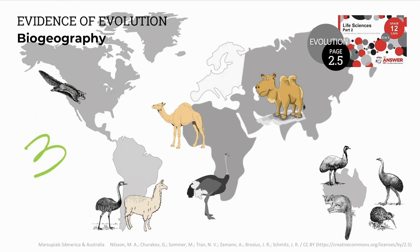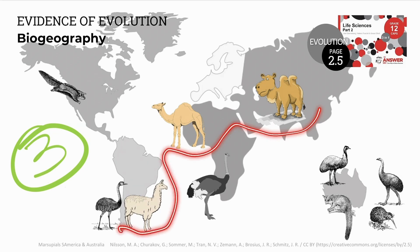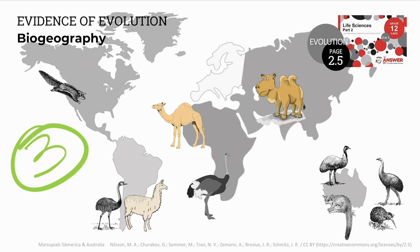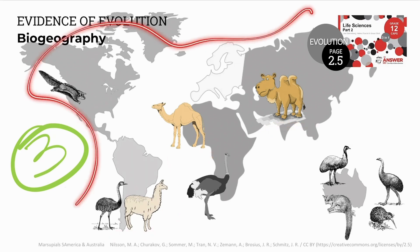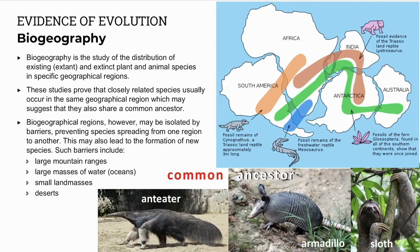Biogeography is the third evidence of evolution. This is the study of species distribution on Earth. Some organisms are very different in similar environments, which indicates no common ancestor. Other animals and plants are similar on different land masses, and scientists propose that these similar organisms have a common ancestor. Closely related species occurring in the same geographical region may suggest they have a common ancestor.